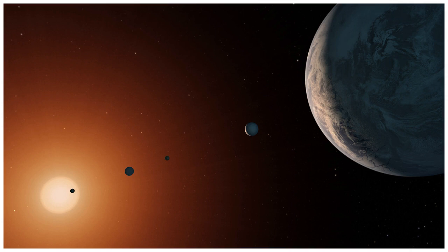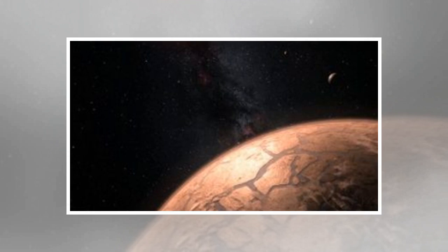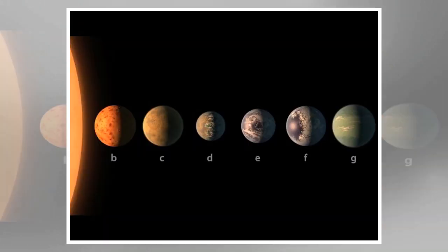When planets in the TRAPPIST-1 system are referred to as Earth-like, the comparison is made in broad terms. Even though they're rocky as opposed to gaseous, and relatively temperate, they're still a far cry from our own planet. Still, the fact that they're somewhat similar gives us a foundation for further research.